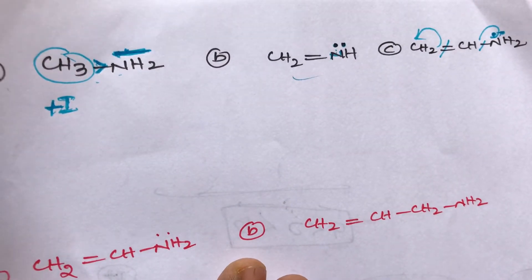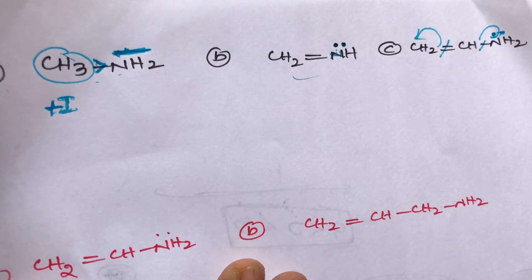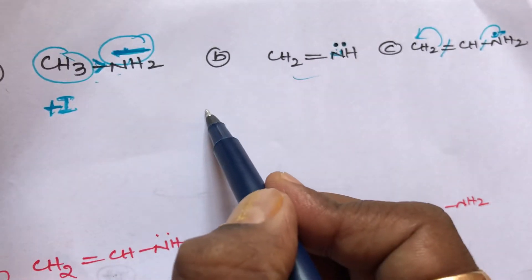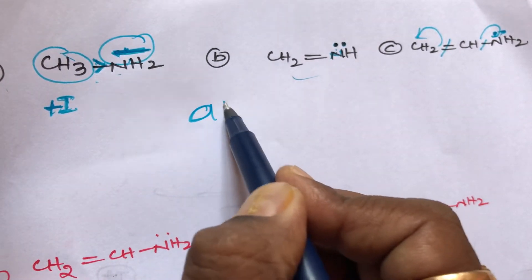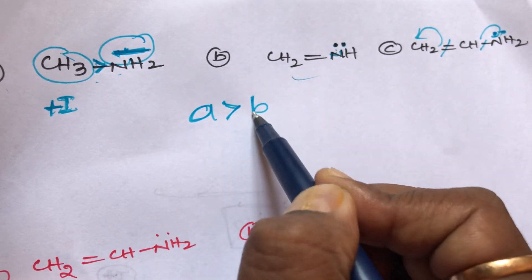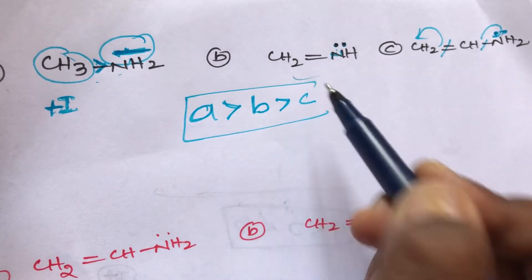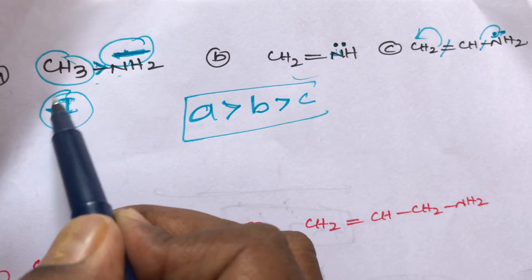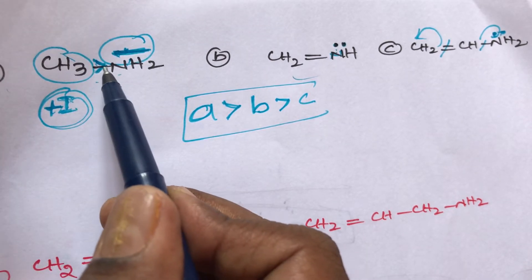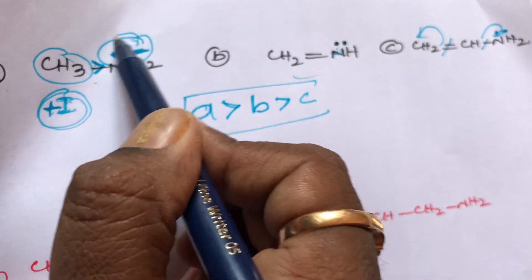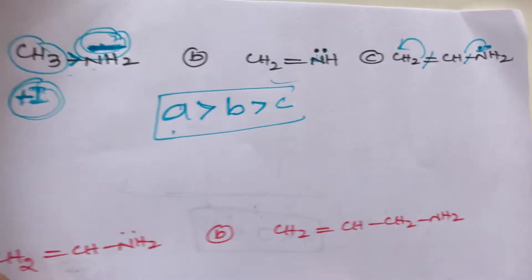The condition for basicity is: more negative charge density on nitrogen means more basic strength. Out of these three compounds, compound A has the most density on nitrogen, so A has the most basic strength. This is because the +I group of CH3 is always electron-releasing, giving nitrogen more negative charge density — so compound A is the most basic.